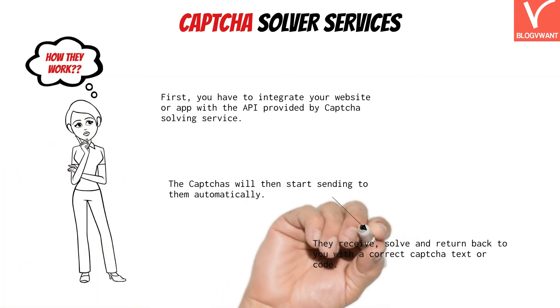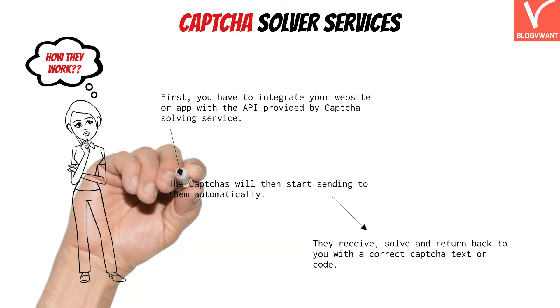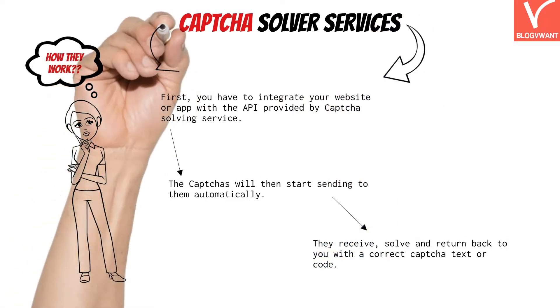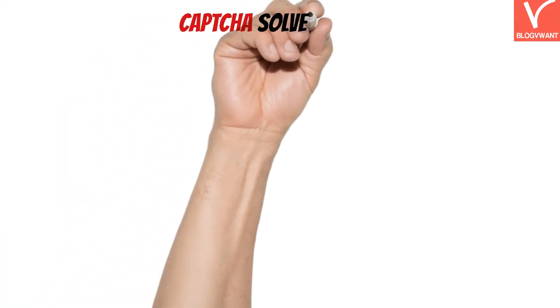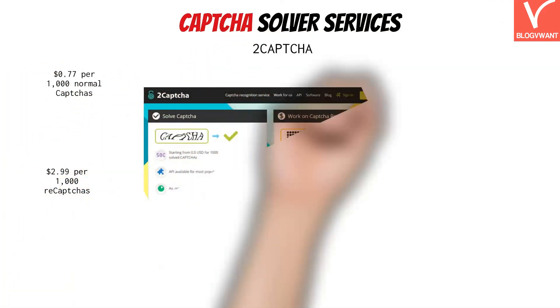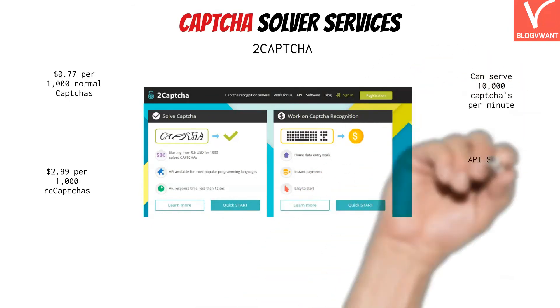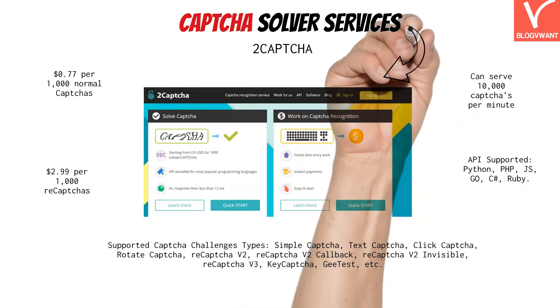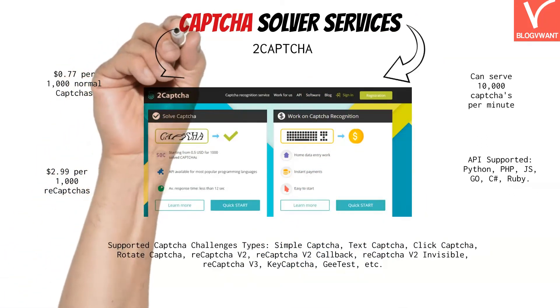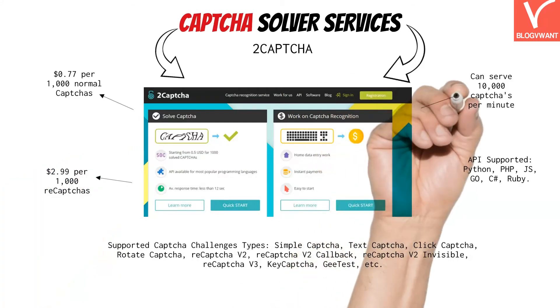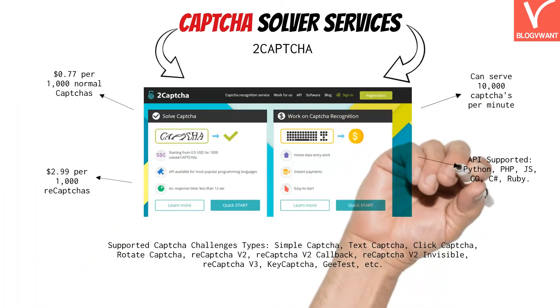Here is how web-based CAPTCHA solving services usually work: first, you integrate your website or web app with the API provided by the CAPTCHA solving service. Then, CAPTCHAs from your website are automatically sent to them. As soon as they receive it, their CAPTCHA workers solve it and return the correct code to fill in for you. The first service is 2CAPTCHA, which charges $0.77 per 1,000 normal CAPTCHAs and $2.99 per 1,000 reCAPTCHAs. This service employs real humans who can solve up to 10,000 CAPTCHAs per minute and handles almost all CAPTCHA challenge types.